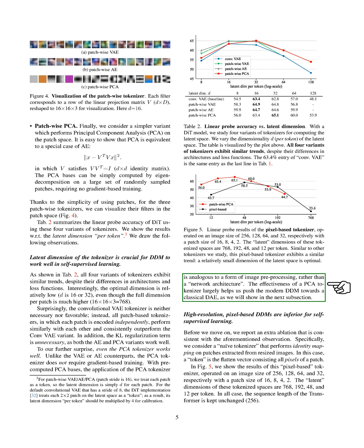Before we proceed, we report an additional ablation that aligns with the previous observation. Specifically, we consider a naive tokenizer that performs identity mapping on patches extracted from resized images. In this case, a token is the flattened vector consisting of all pixels of a patch. In the figure, we show the results of this pixel-based tokenizer operated on an image size of 256, 128, 64, and 32, respectively with a patch size of 16, 8, 4, 2. The latent dimensions of these tokenized spaces are 768, 192, 48, and 12 per token. In all cases, the sequence length of the transformer is kept unchanged, 256.